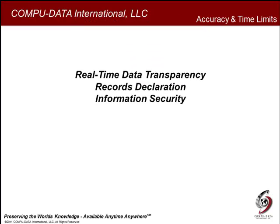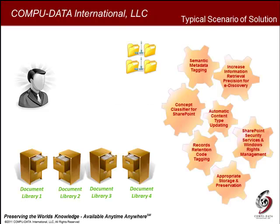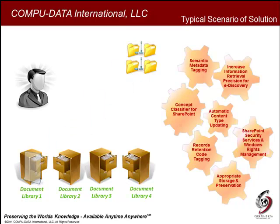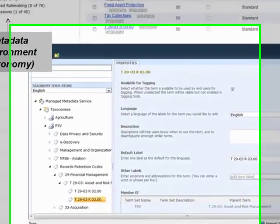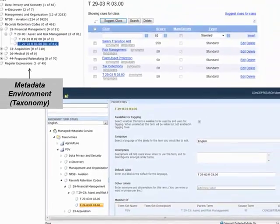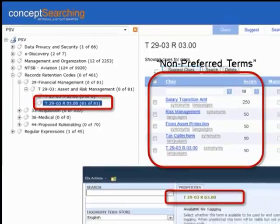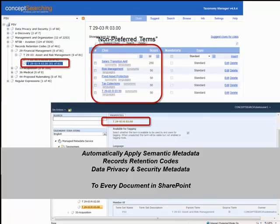When accuracy and timeliness are critical, organizations need a solution that offers real-time data transparency, records declaration, and information security at all operational levels. In a typical scenario when a single document or multiple files are loaded into SharePoint, Concept Classifier for SharePoint seamlessly initiates an automated process behind the scenes. Because the appropriate metadata environment in Taxonomy Manager is synchronized in real-time to the SharePoint term store, Concept Classifier is able to instantly interrogate SharePoint content for non-preferred terms, associate those with SharePoint metadata, and automatically apply semantic records retention code and data privacy and security metadata to the custom properties of every document in SharePoint.